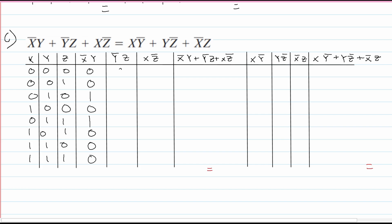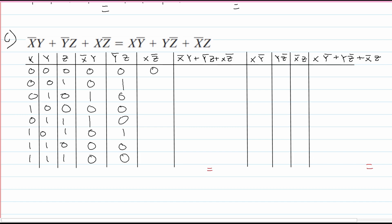For not-y·z: wherever z is 0, it's automatically going to make these a 0. Then the same not-y rule applies — this is going to be a 1, this is a 1, this is a 0, and this is a 0, because of the not operator. For x·not-z, we're looking at the z column: wherever x is 0, it's automatically a 0. Then per the not-z rules, we get 1, 0, 1, 0 for the remaining rows.